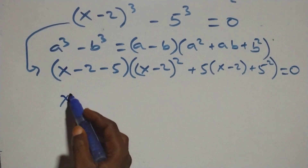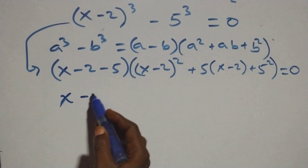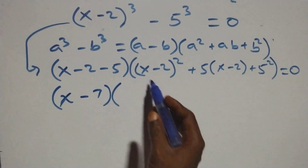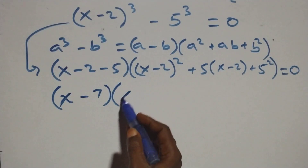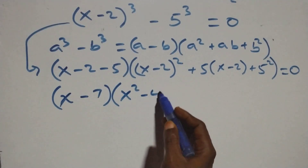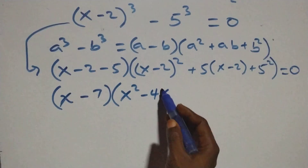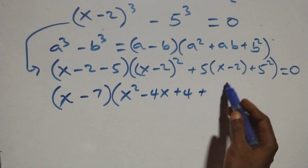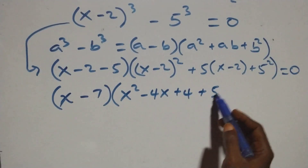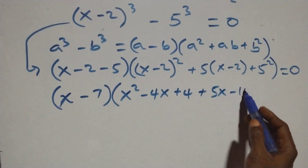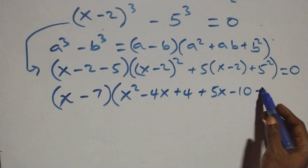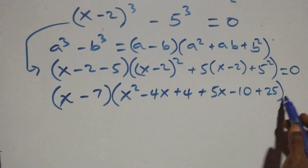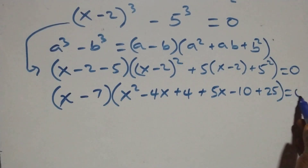So we have (x minus 7) times an open bracket. Expanding gives x squared minus 4x plus 4, then plus 5 times (x minus 2), giving 5x minus 10, then plus 5 squared which is 25, close bracket, equals 0.